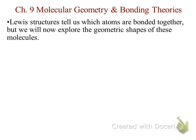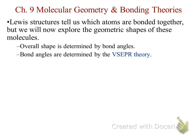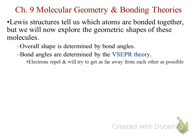All of this is going to be based on models because we cannot see an individual molecule. We want to look at the overall shape, which is going to be determined by the bond angles. As we make these different connections, you're going to start to see the repulsion of the electrons, and that's going to make a big difference in the overall structure. The bond angles are determined by what we call VSEPR theory — valence shell electron pair repulsion theory — which gives us the idea that electrons will try to get as far away from each other as possible.